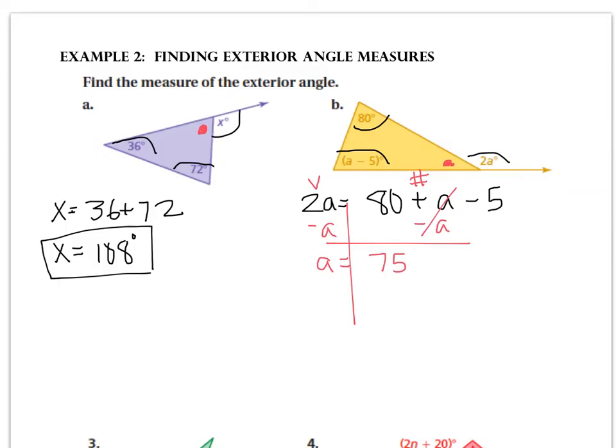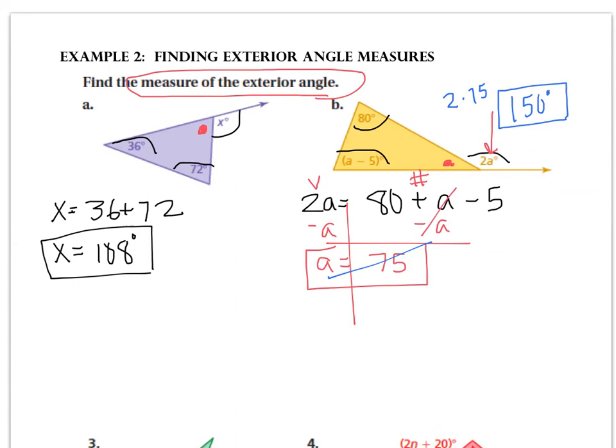And then everything's on the side it belongs on, and a is 75. But, uh-oh, ha-ha, you've got to read the direction. They don't want the value of the variable. They want the exterior angle measurement. So if a is 75, then 2 times 75 is going to be the answer. This is not the answer. 150 degrees is the answer. Don't go all the way through a question and then get it wrong because you were too lazy to go back and check the directions. That's very, very saddening as your teacher to see you do that.